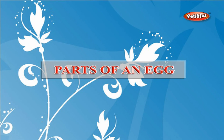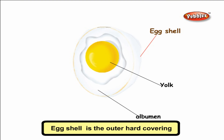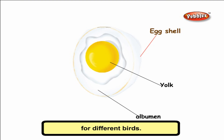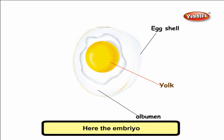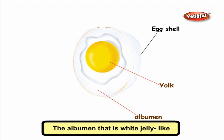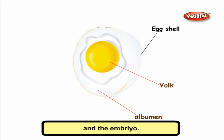Parts of an egg: The egg shell is the outer hard covering and is of different colors for different birds. The yolk is in the middle and is rich in fat, vitamins, and minerals — here the embryo develops into a chick. The albumen, which is white and jelly-like, is rich in protein and protects the yolk and the embryo.